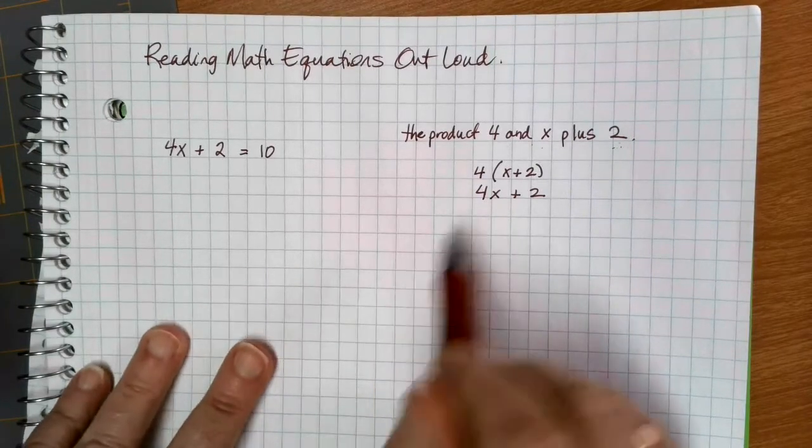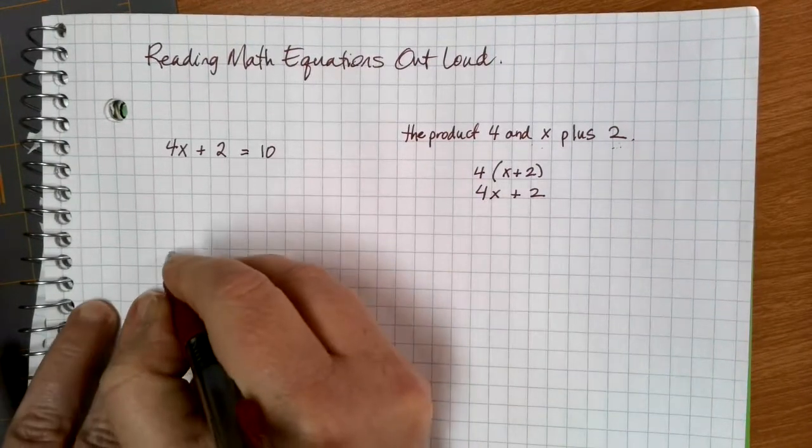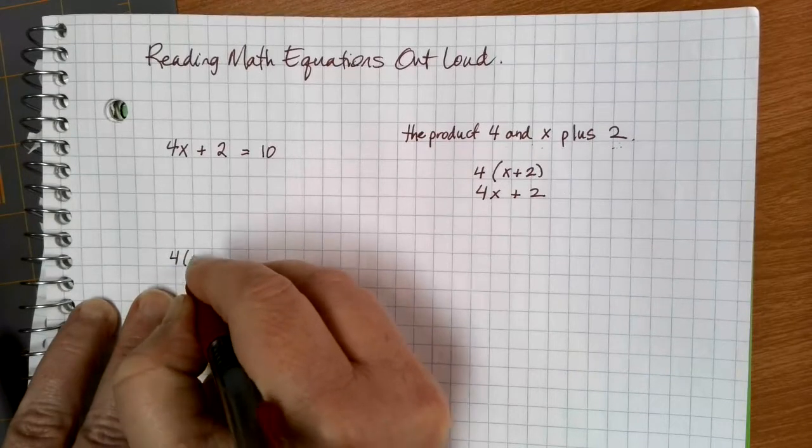So what type of wording can we do to make it a little more clear about the order of operations? Here's a couple of ideas.